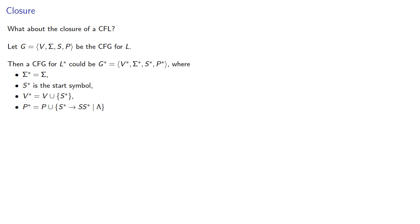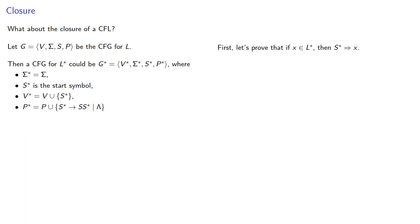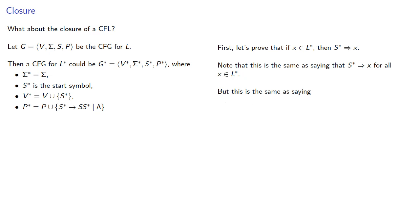To prove this is a context-free grammar for L*, we need to show that if x is in L*, then S* ⇒ x, and likewise if S* ⇒ x, then x must be in L*. First, let's prove that if x is in the closure, then S* produces x. This is the same as saying S* produces x for all x in L, for all x in L², for all x in L³, and so on — an infinite ordered list of statements, so we'll need an induction proof.